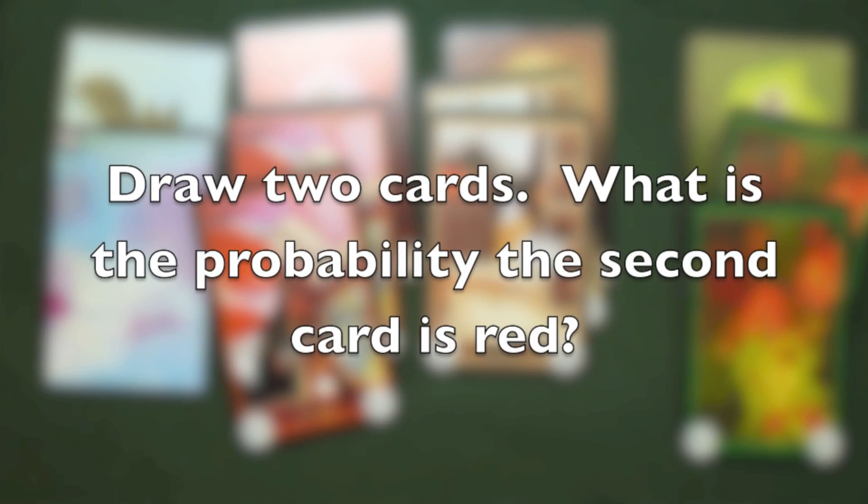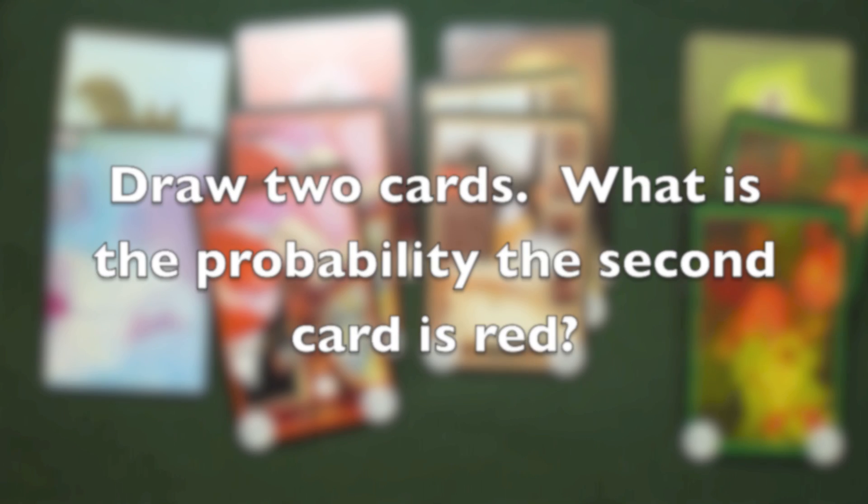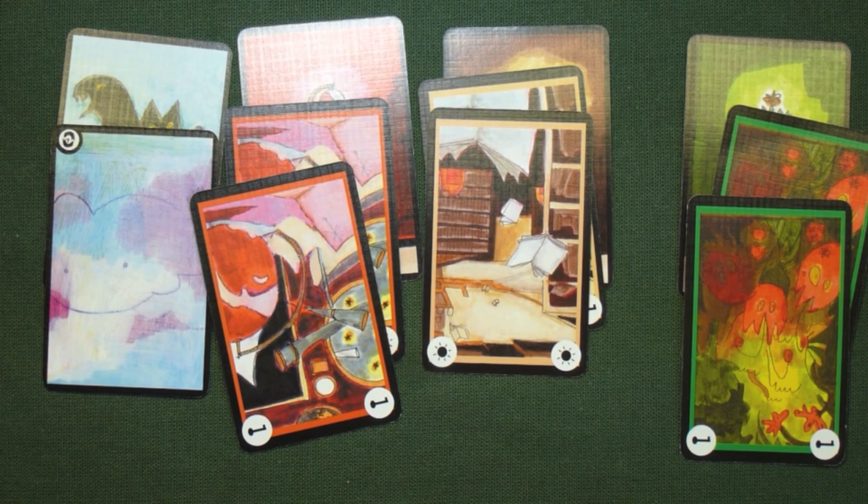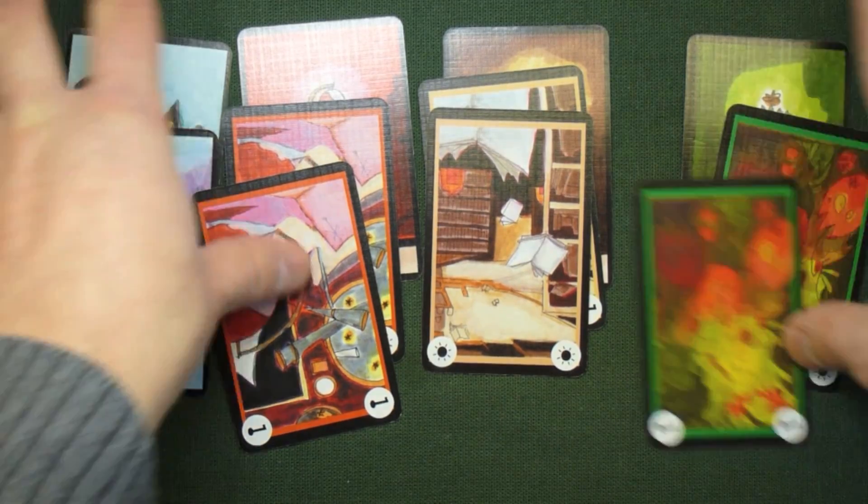I want to know the probability that if I draw two cards, the second card is going to be red. We're going to approach this as a tree, but first let's take a look at the two different things that could happen.